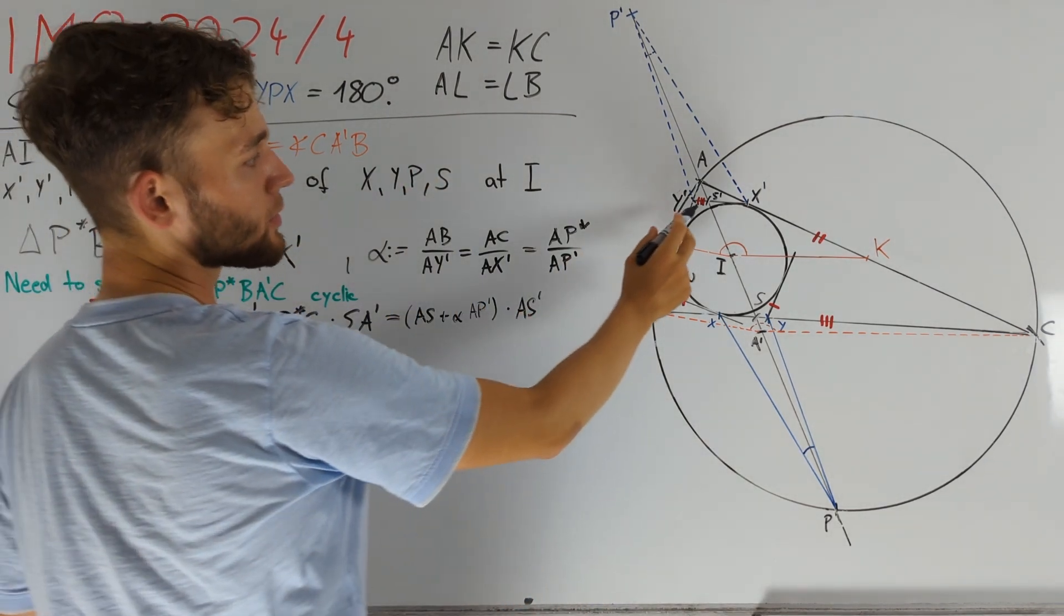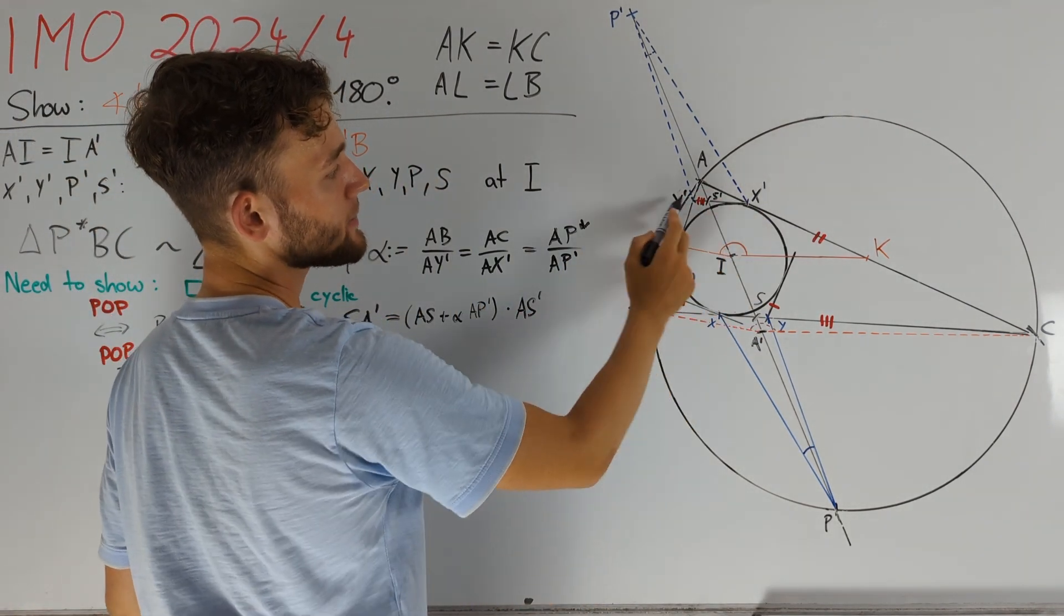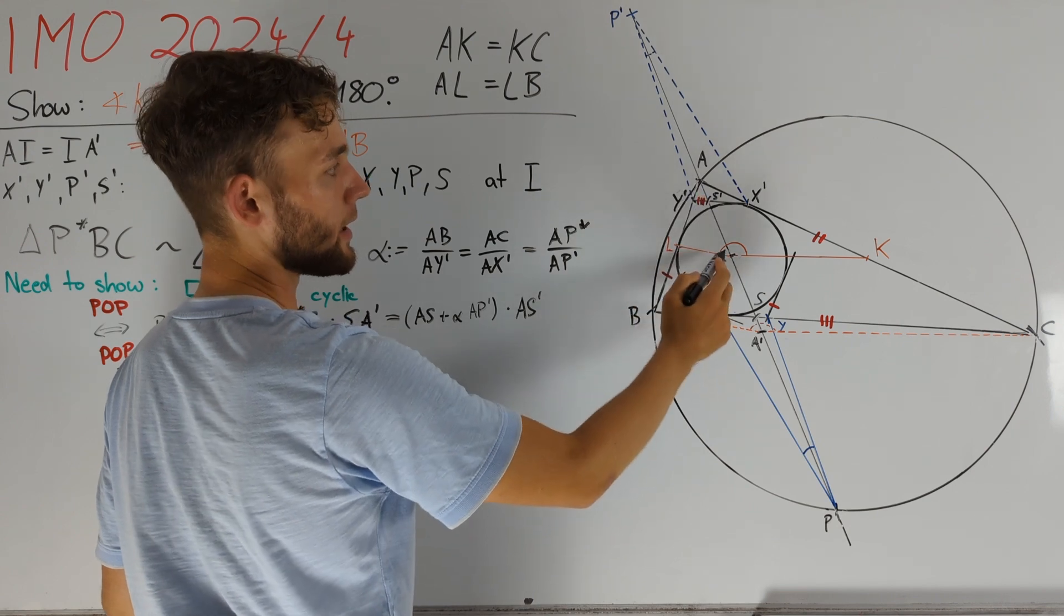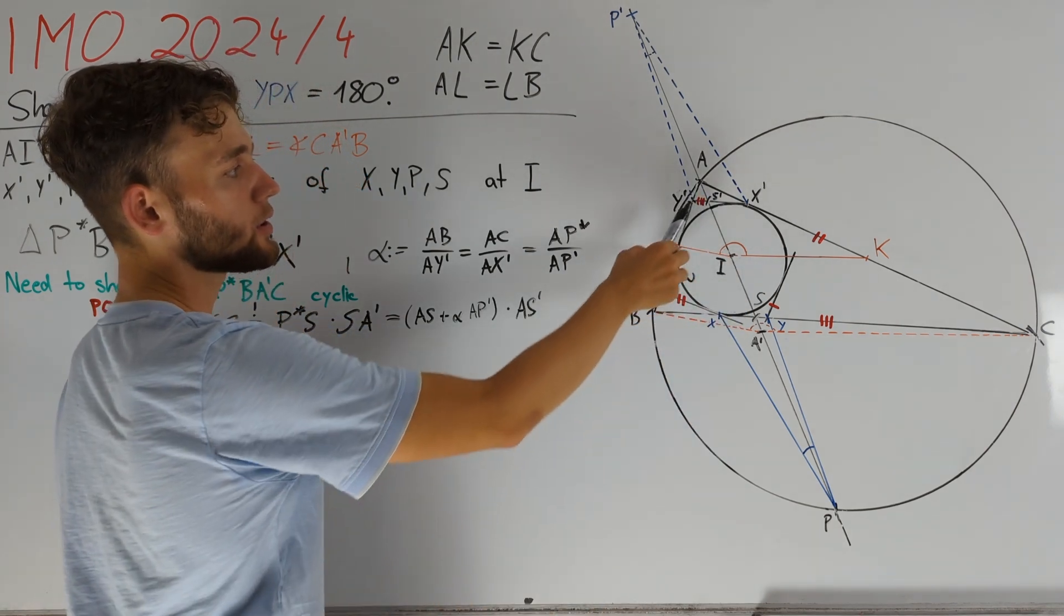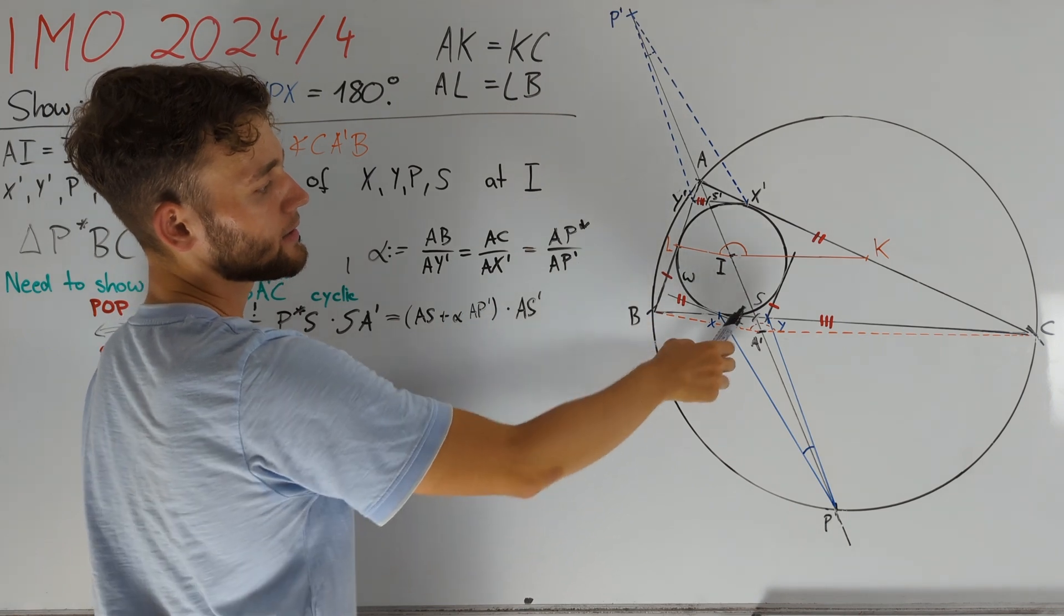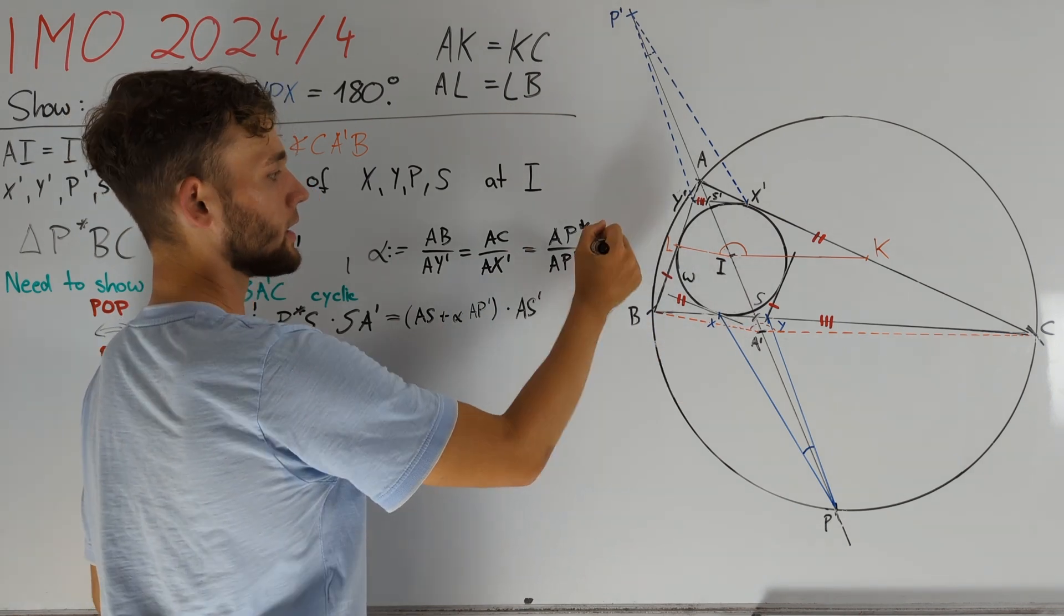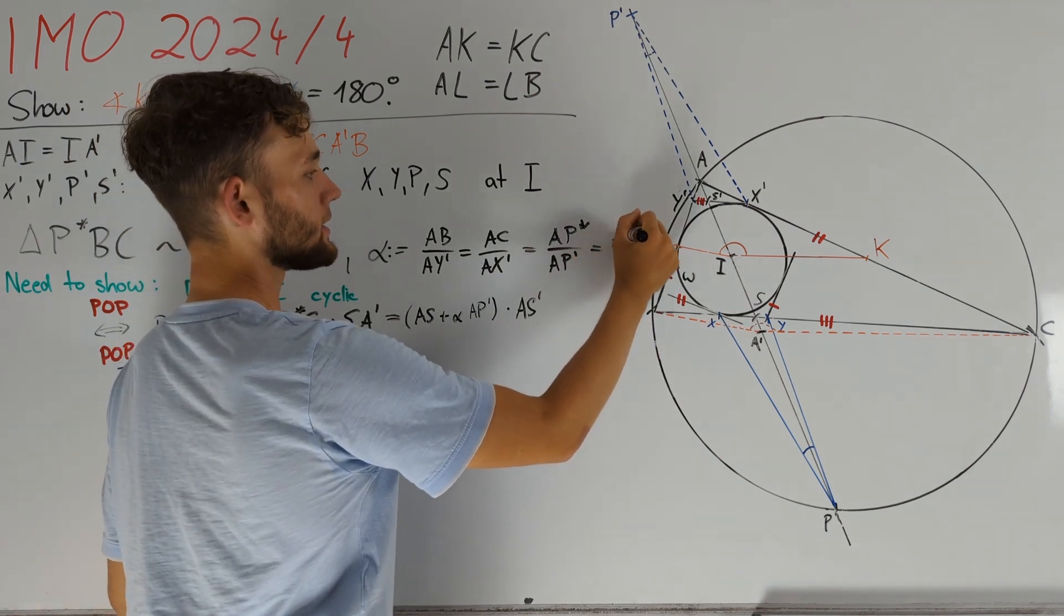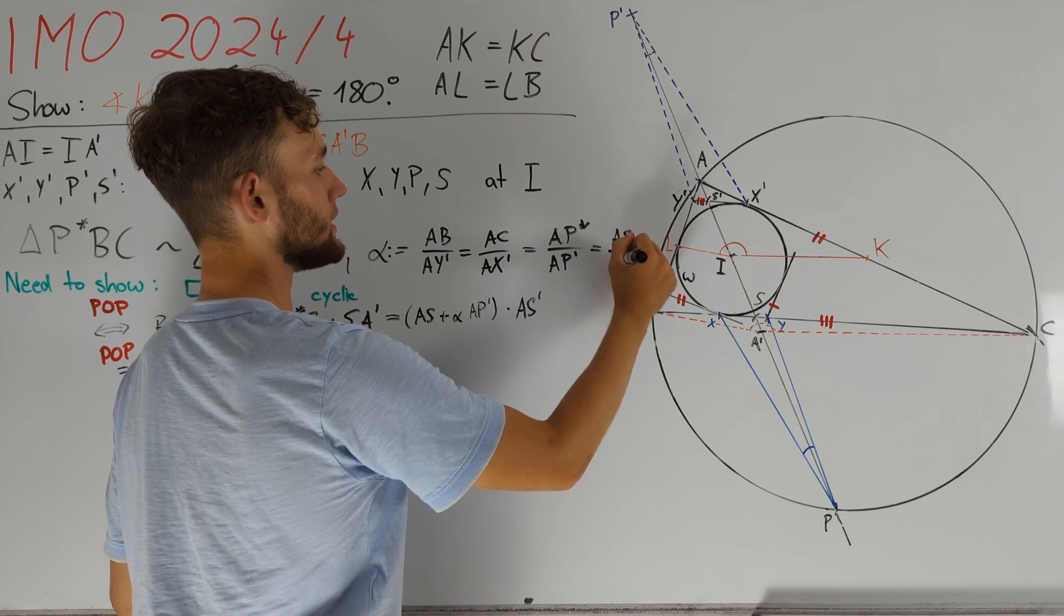This is useful because S prime is the intersection of X prime, Y prime, and AI. Therefore, the image of S prime under our homothety at A is nothing but S. In other words, AS divided by AS prime is equal to alpha.